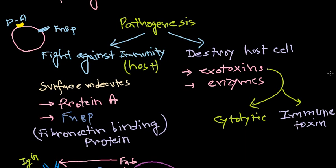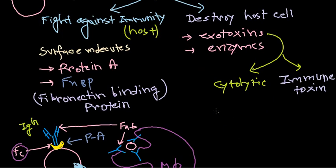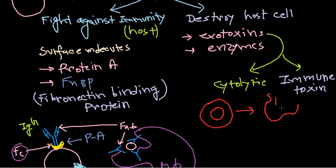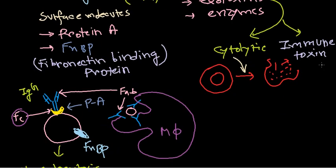Cytolytic toxins are often associated with red blood cells — they are hemorrhagic in nature. Due to the activity of these toxins, red blood cells get ruptured and their contents come out. Immunotoxins work differently — they bring more and more immune cells and force the immune system to generate more chemical mediators like interleukins and cytokines. As a result, this causes Toxic Shock Syndrome, or TSS.